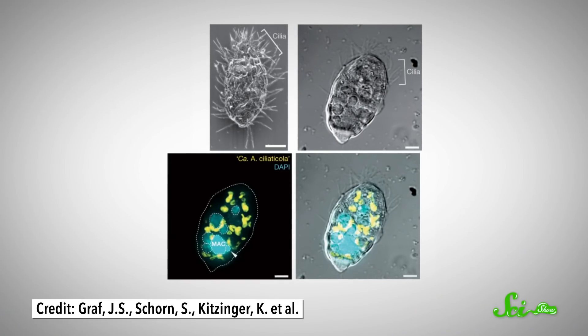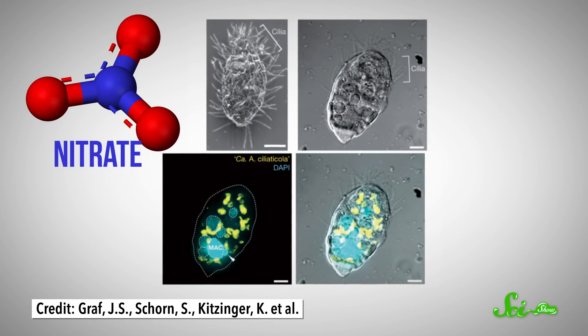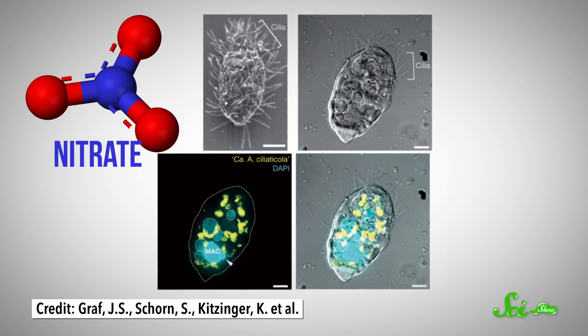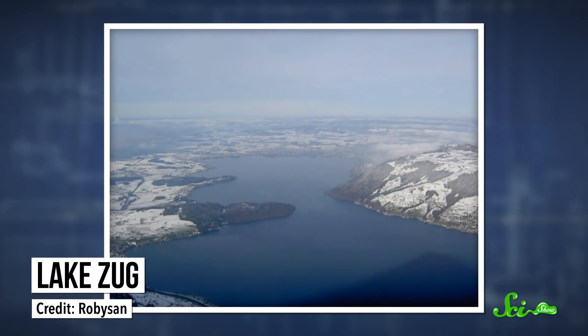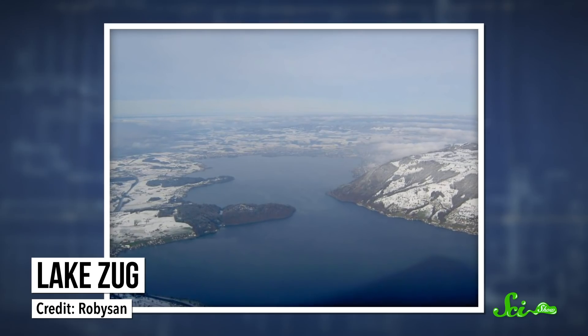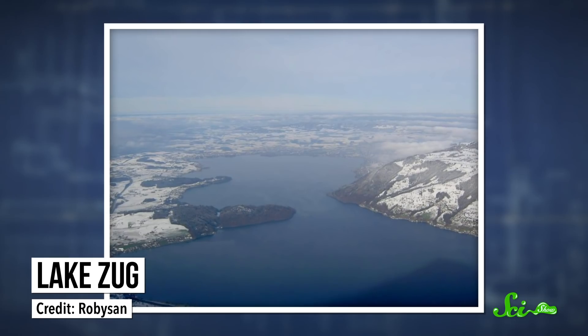But some have developed a way to breathe something other than oxygen. Like the organisms recently discovered at the bottom of Lake Zug in Switzerland, that breathe nitrate, a molecule with one atom of nitrogen and three oxygens, which they convert into nitrogen gas. Unlike most oxygen breathers who breathe in O2 and breathe out CO2. The waters at the bottom of this lake are oxygen-depleted but brimming with nitrate, so you can see why these little Swiss survivors need to make use of the ingredients in their environment.